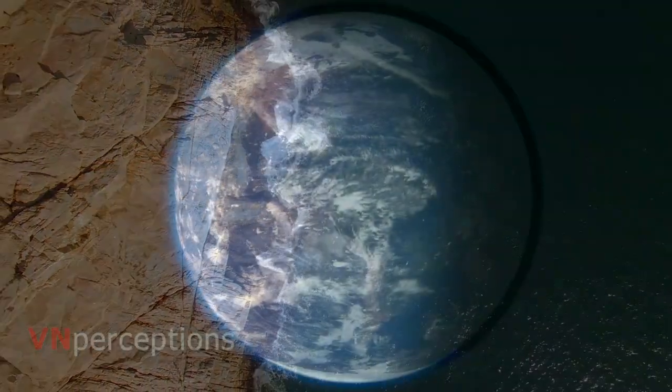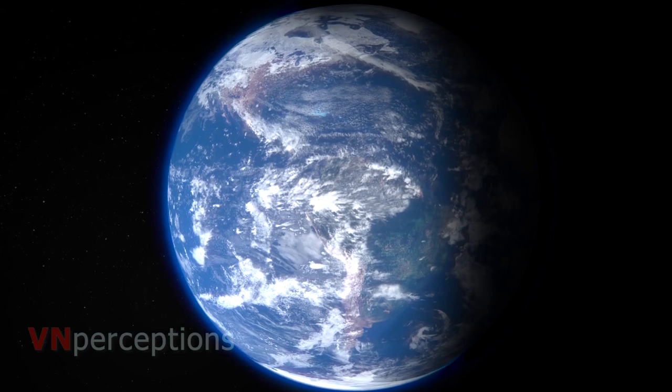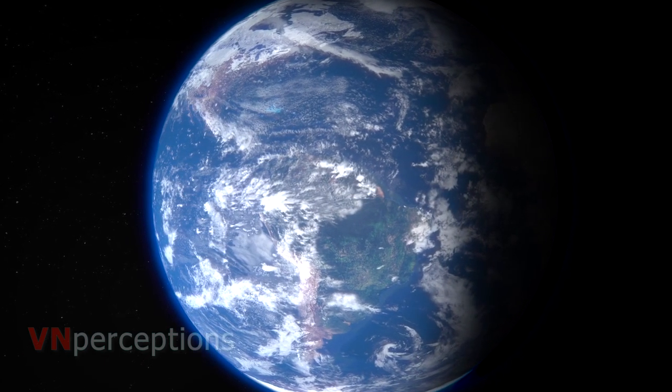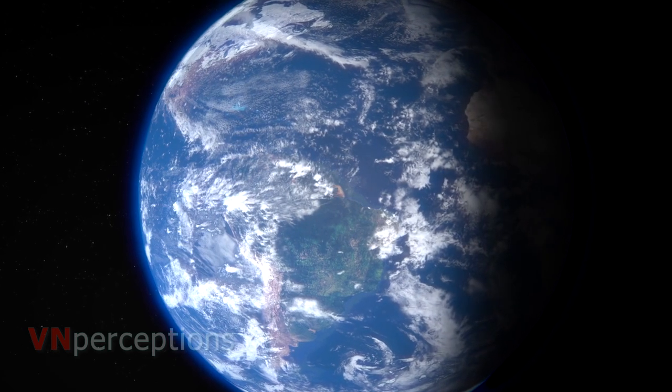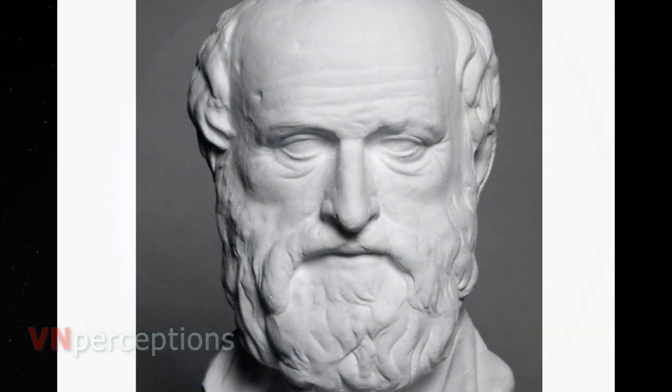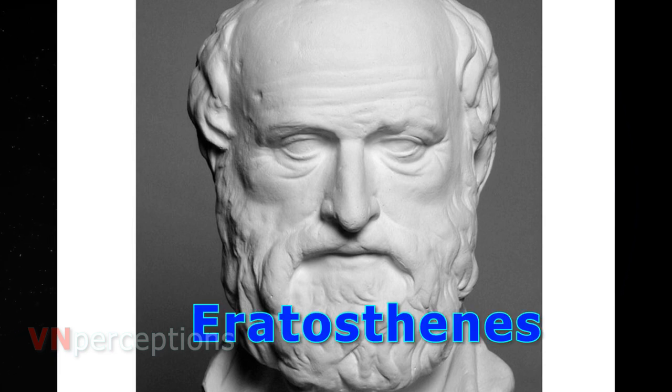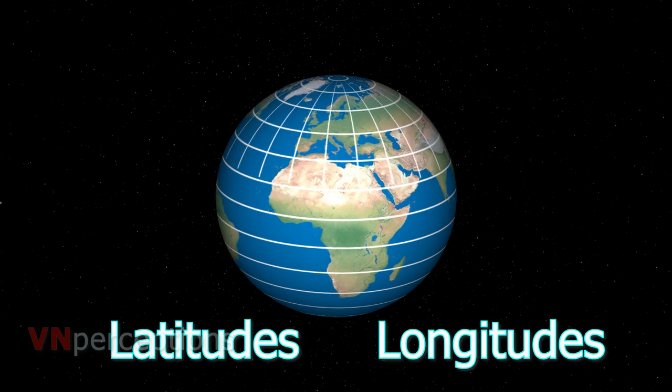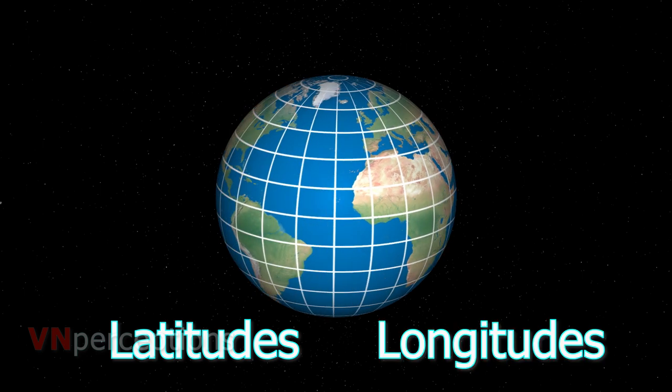The Earth is so big in size that it was difficult to tell the location of any place on the Earth. And so, a Greek philosopher and mathematician, Eratosthenes, came up with latitudes and longitudes.